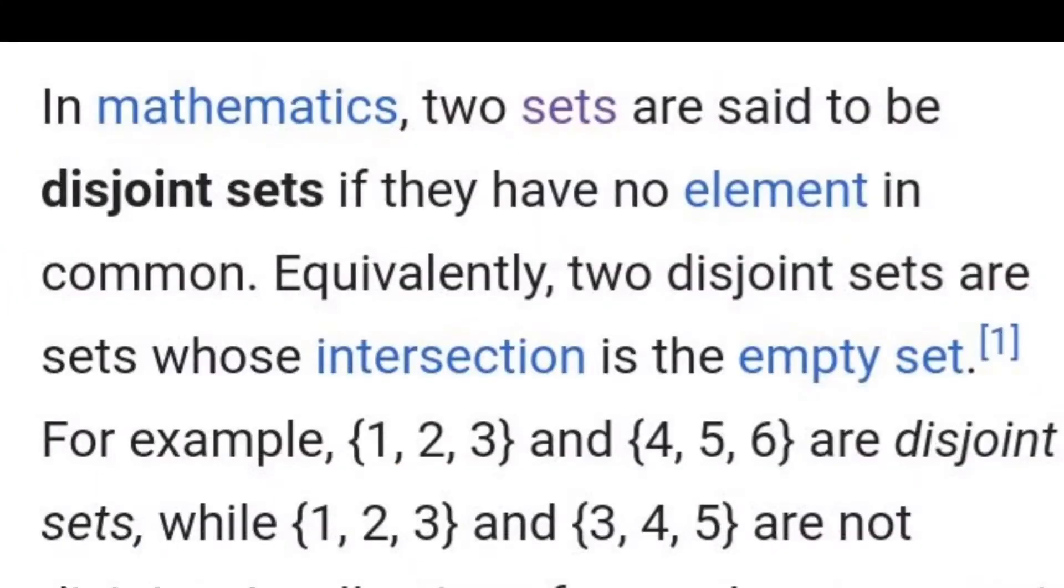Students, in mathematics, two sets are said to be disjoint sets if they have no element in common. Mathematics mein do set uswakt disjoint sets hongay jab dono ke elements common na hoon. Equivalently, two disjoint sets are sets whose intersection is the empty set. Or disjoint sets wongay jinka intersection hamaisha empty set ay.